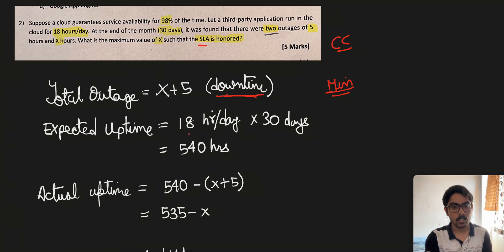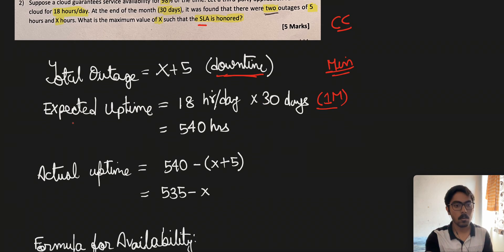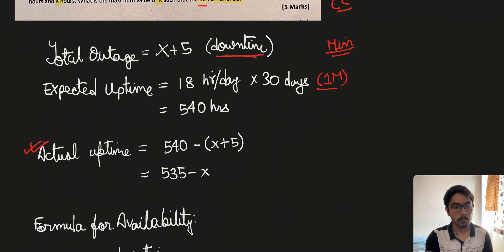The expected uptime is 18 hours per day multiplied by 30 days, since we are calculating for one month. This comes out to be 540 hours. Now comes the actual uptime which the client is receiving, which will be expected uptime minus downtime.